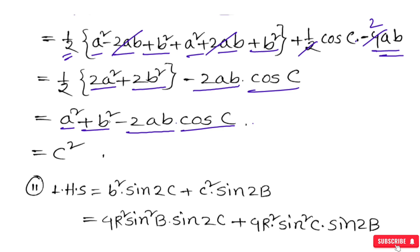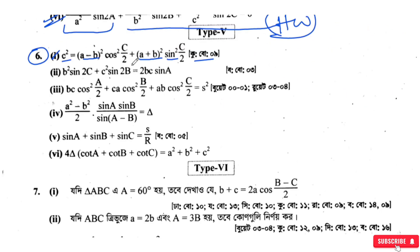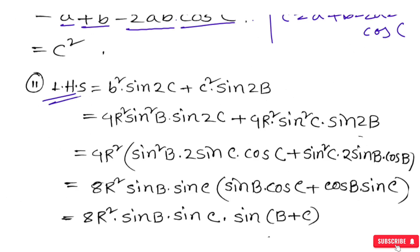So c squared equals a squared plus b squared minus 2ab·cos C — that is the cosine rule. And the next problem: b squared·sin(2C) plus c squared·sin(2B) is equal to 2bc·sin A.